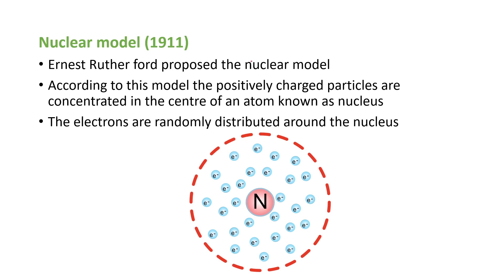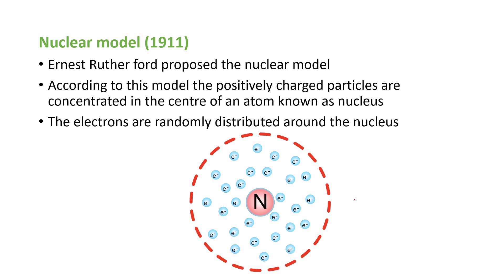Next is the nuclear model, proposed by Ernest Rutherford in the year 1911. According to this model, the positively charged particles are concentrated in the center of the atom, known as the nucleus — protons and neutrons are present in the nucleus. Electrons are randomly distributed around the nucleus, similar to the Plum Pudding model. However, this is also not a perfect explanation of the structure of the atom.